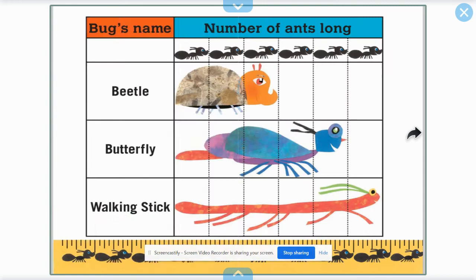The measuring goes on while the ants begin to build. How many ants long is beetle? Let's count. One, two, three.